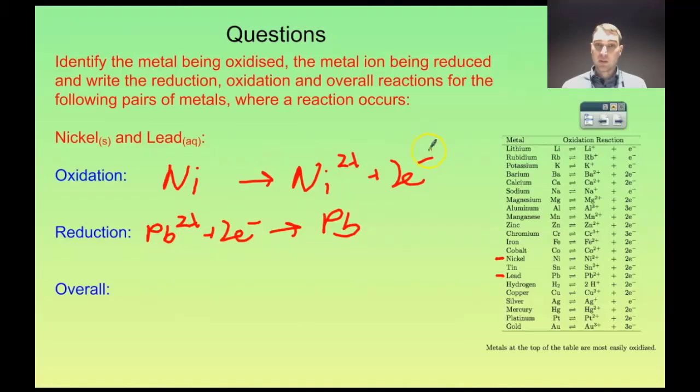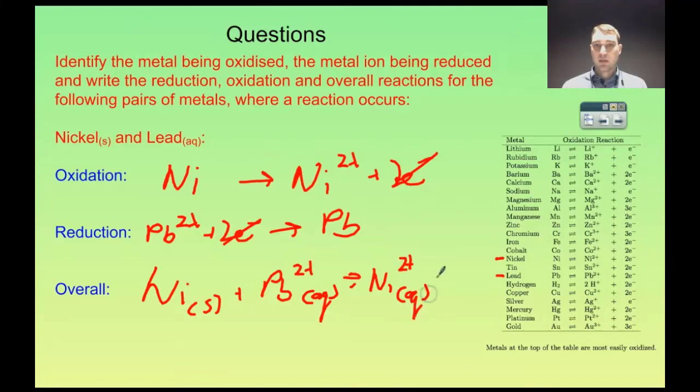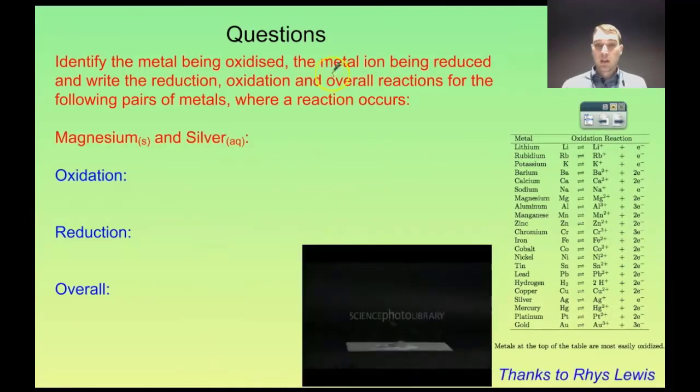Our overall equation is nice and easy here because the electrons will cancel out. So we've got nickel solid plus lead ions, Pb2+, ions in solution, aqueous, goes to nickel ions, aqueous, and we would see solid lead forming around the piece of nickel. So lead solid.